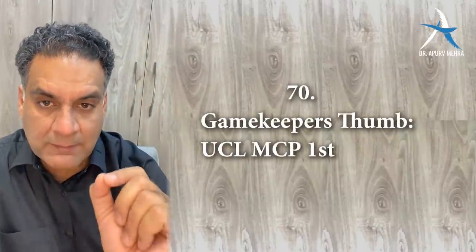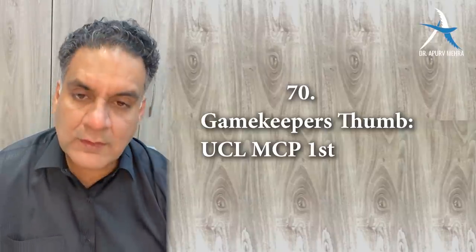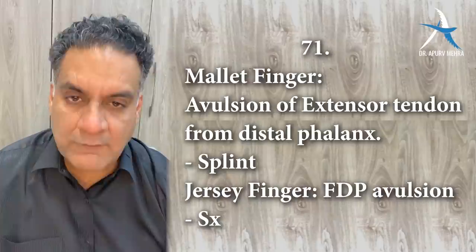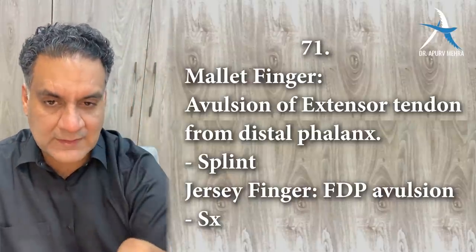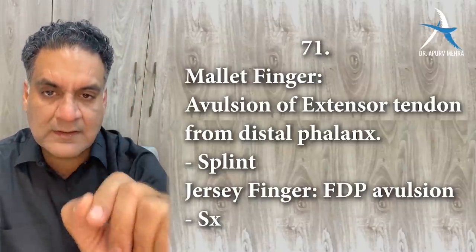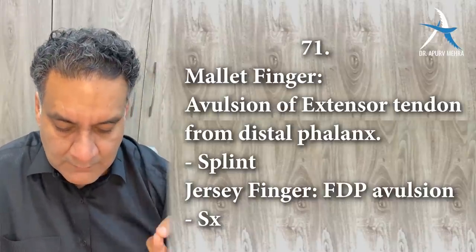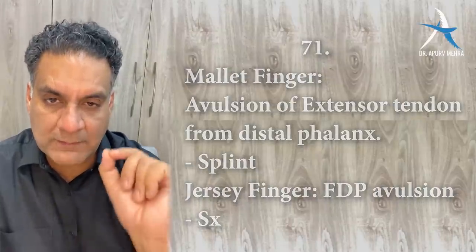Point number seventy: Gamekeeper's thumb — damage to the ulnar collateral ligament of the first metacarpophalangeal joint. Point number seventy-one: mallet finger is avulsion of the extensor tendon from the distal phalanx — managed conservatively. Jersey finger is the FDP avulsion — treated by surgery.